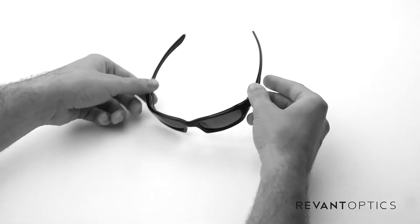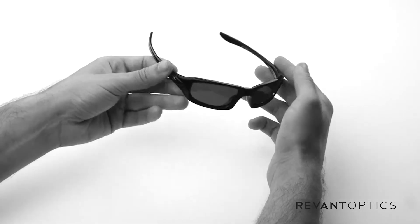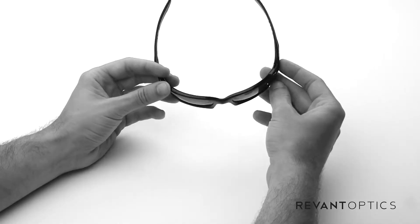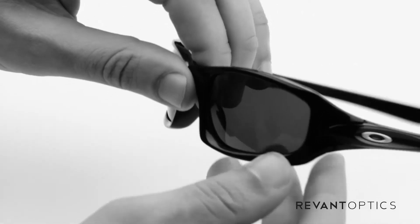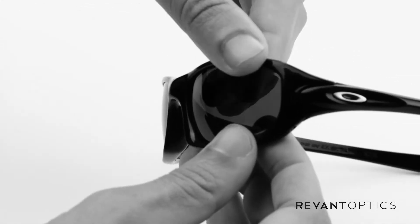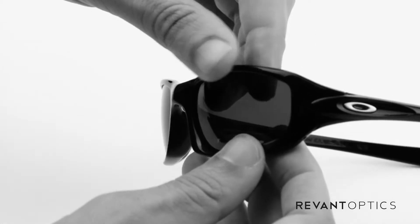This is an all plastic frame, relatively lightweight, sporty model here. The way you're going to remove your lenses is by pulling up on the top edge of the frame and then pulling down on the bottom edge and pushing on the back of the lens to get it to pop out.